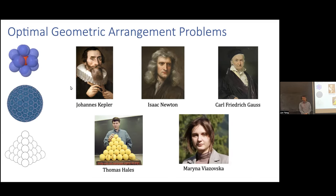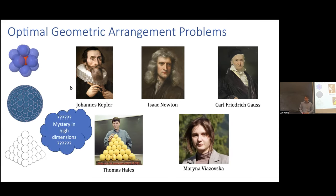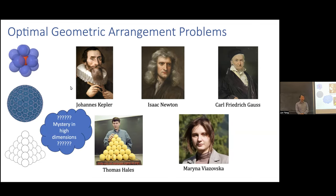More recently, Marina Viazovska won the Fields Medal for her spectacular work settling the sphere packing problem in dimension eight, and subsequently with collaborators in dimension 24, where there are special highly symmetric lattices. Despite these fantastic breakthroughs, there is still a lot of mystery in high dimensions. For all of these problems, the best upper and lower bounds in dimension 1000 differ by a gap that is exponential in the dimension — we understand these problems very poorly in high dimensions.